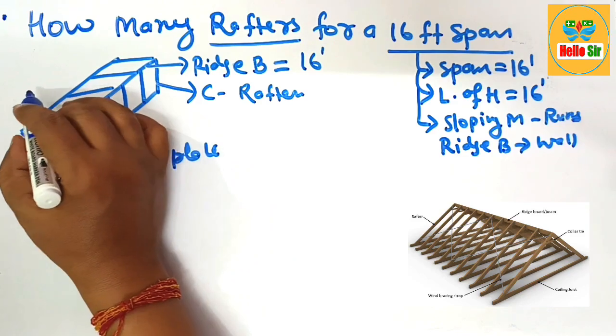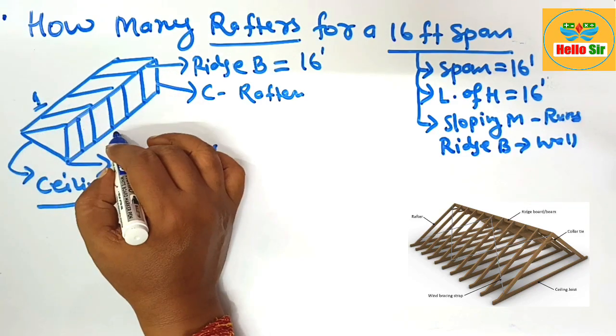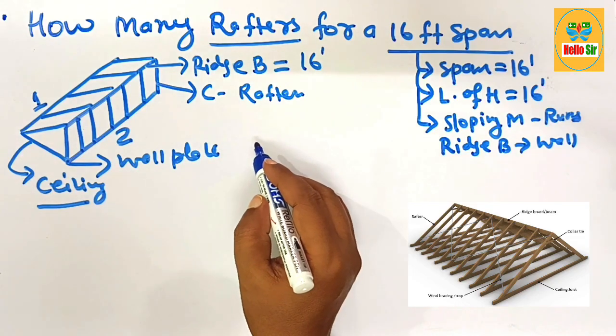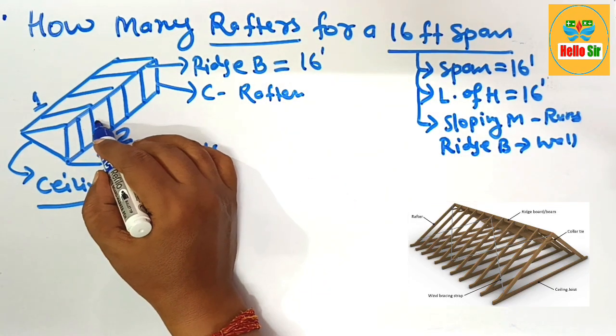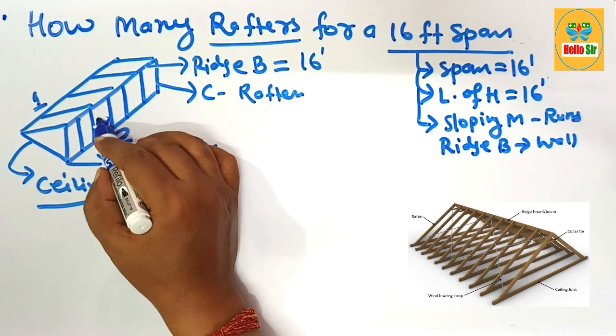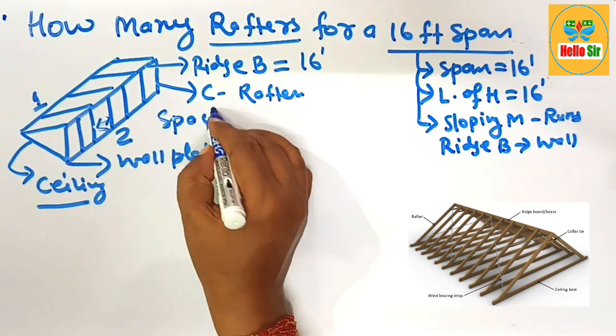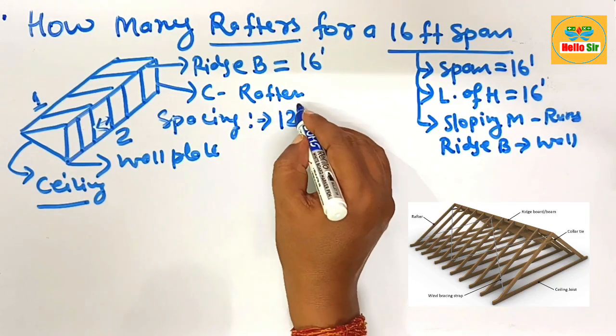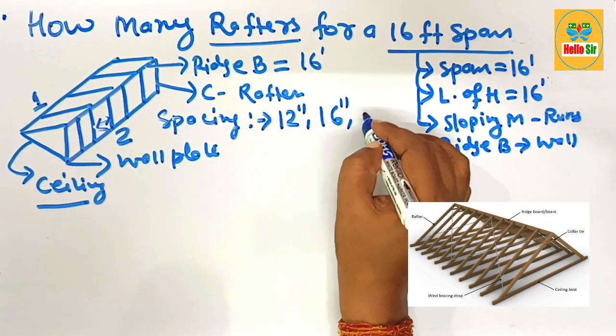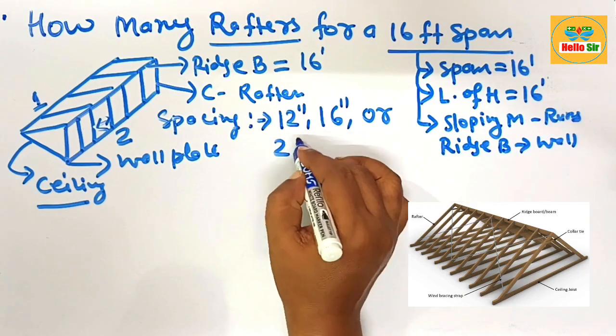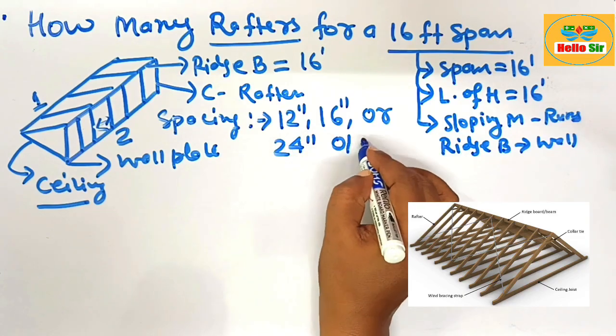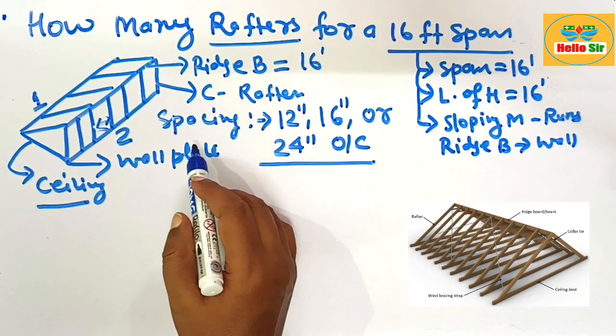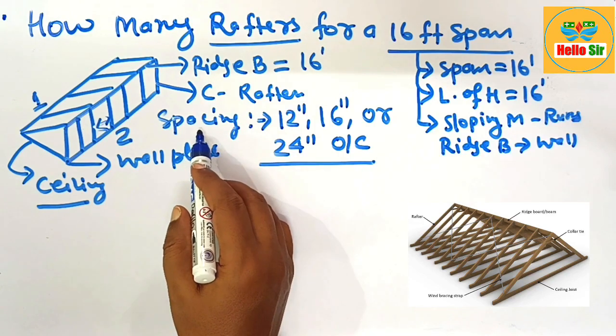You have to calculate the number of rafters for both sides. How many rafters are required for a 16-foot span? The distance between two rafters is called spacing. What is the spacing between rafters? It may be 12 inches on center, 16 inches on center, or 24 inches on center. The number of rafters depends on the spacing between the rafters.